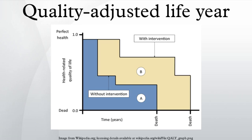The Quality Adjusted Life Year, or QALY, is a generic measure of disease burden, including both the quality and the quantity of life lived. It is used in assessing the value for money of a medical intervention. One QALY equates to one year in perfect health.